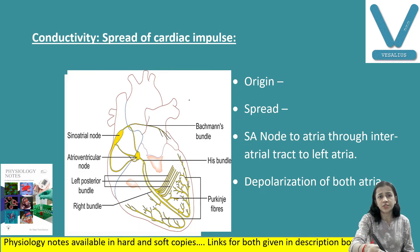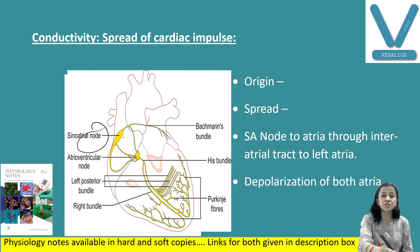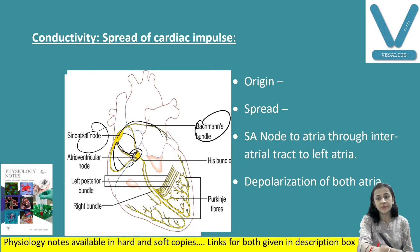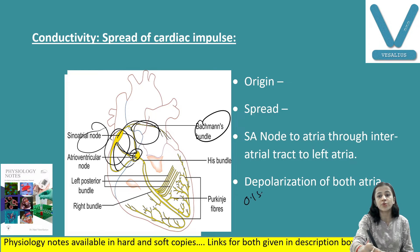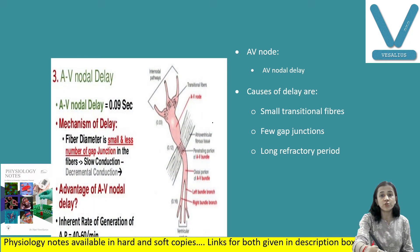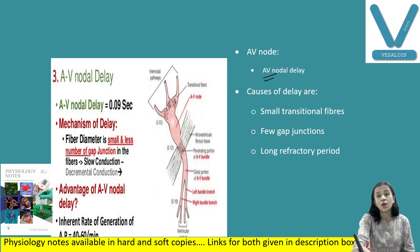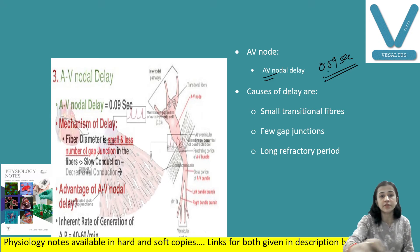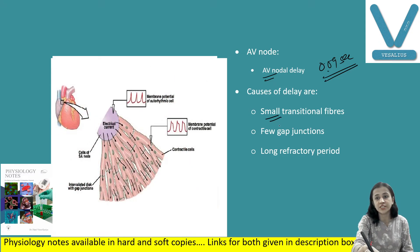Conductivity is the spread of cardiac impulse. The cardiac impulse originates from the SA node and spreads through the conducting system. Impulses travel from SA node to the other atrium through Bachmann's bundle, and from SA node to AV node through the internodal tracks. Atrial depolarization — the whole atria gets depolarized — requires 0.1 second. Then the impulse reaches the AV node fibers.